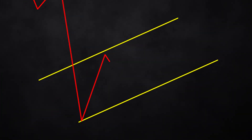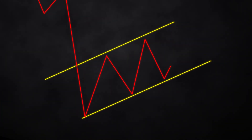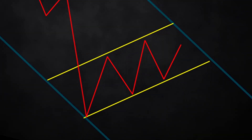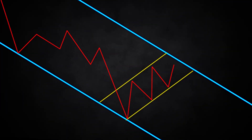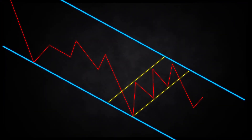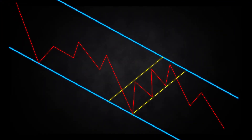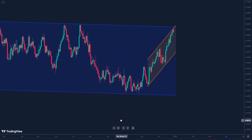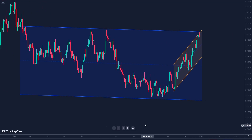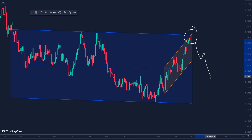We know that prices move by bouncing off the extremes of a range. These ranges are of different sizes and, in turn, are within larger ranges in different time frames. Following this principle, we can use this indicator to detect opportunities at the extremes of these ranges.